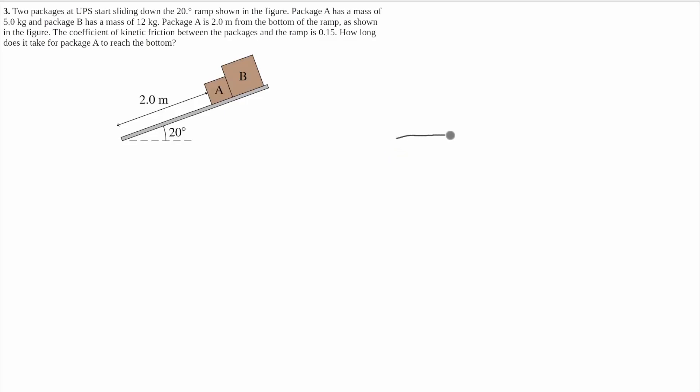Here we have number three. So it tells you that you have a ramp. This ramp is at a 20 degree angle. I'll call this theta. And it tells you that you have two boxes that are sliding down. Well, these boxes are kind of connected. B is pushing on A and they're touching each other.